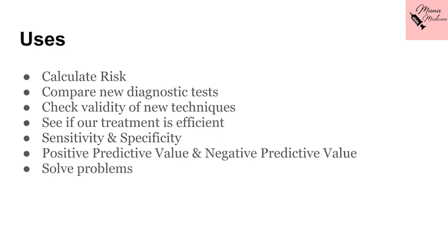I have tried to list some of the uses of the 2x2 table. It is used to calculate risk — for example, whether cigarette smoke is involved in the development of gastric carcinoma or not. It can also be used to compare new diagnostic tests with the previous ones or with the gold standard, to check the validity of new techniques. We can also see if our treatment is efficient, and we can check the sensitivity and specificity, the positive predictive value and the negative predictive value, or even solve problems. I will show you an example just in a while.